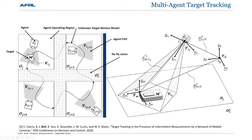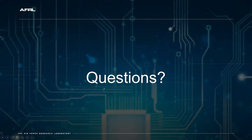The goal is to structure networks to improve prediction and evaluation, so that as a target leaves one camera's field of view, we can inform a neighboring agent to go to a location to reacquire and continue tracking the target.